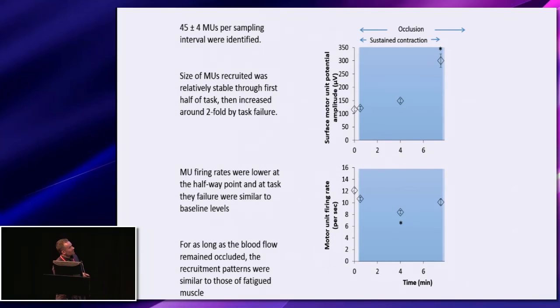By task failure, the firing rates of the motor units were not significantly different from those at the beginning in the fresh muscle. Despite the size of those units being up to three-fold greater, you would actually expect these firing rates to be about 28 hertz.